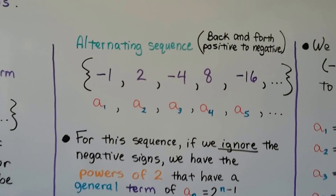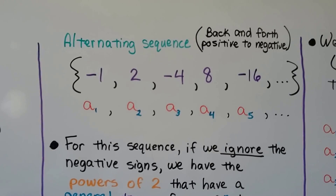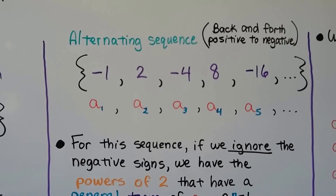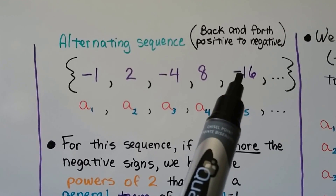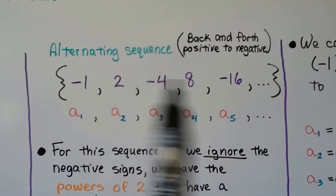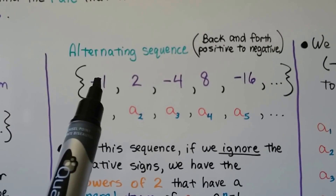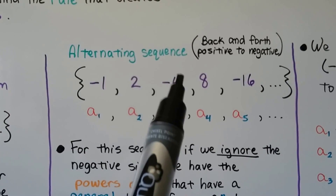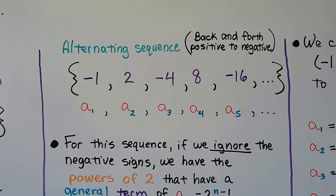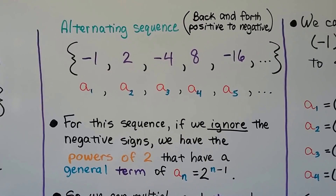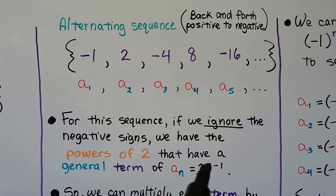Now there's also a thing called alternating sequences — they go back and forth between positive to negative to positive to negative. If you look at this sequence, we've got negative one, positive two, negative four, positive eight, negative sixteen. If we ignore the negative signs, two is double one, four is double two, eight is double four, and sixteen is double eight. So for this sequence, ignoring the negative signs, we have the powers of two with a general term of two to the n minus one.